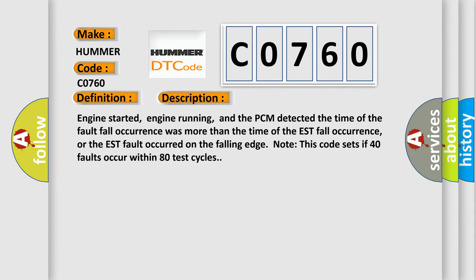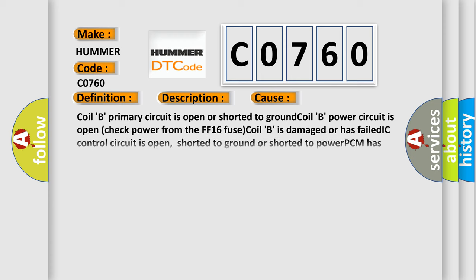This diagnostic error occurs most often in these cases: Coil B primary circuit is open or shorted to ground. Coil B power circuit is open — check power from the FF16 fuse. Coil B is damaged or has failed. IC control circuit is open, shorted to ground, or shorted to power. PCM has failed.